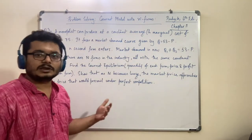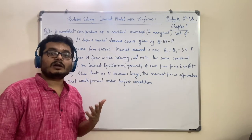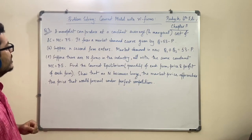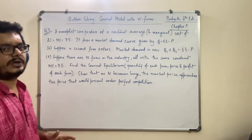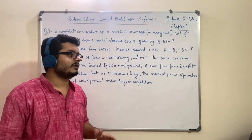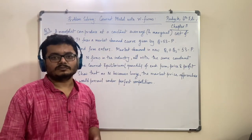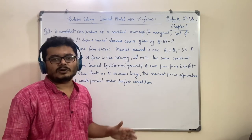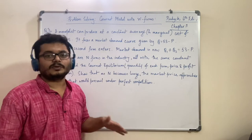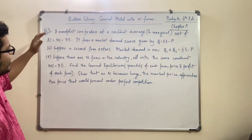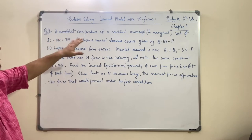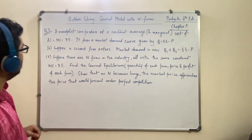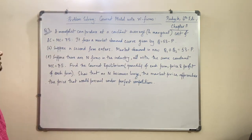If you open the book and look at question number 3 — which may have a different problem number in other editions — the problem is pretty long. It is one of the chapter practice problems. If you solve it you will get the whole picture about the Cournot model, its place after monopoly, and everything. The problem starts with a monopoly scenario: a monopolist can produce at a constant average and marginal cost, AC = MC = 5 rupees.